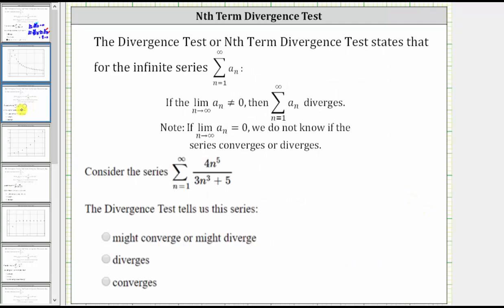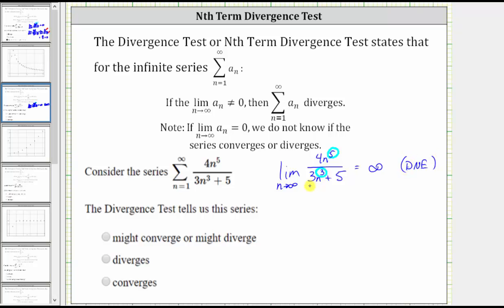Let's look at a second example — same question, different series. To apply the divergence test, we need to find the limit as n approaches infinity of four n to the fifth divided by the quantity three n cubed plus five. The degree of the numerator is five and the degree of the denominator is three. Because the numerator has a higher degree, as n approaches infinity the numerator increases faster than the denominator, and therefore the fractions get larger and larger and approach infinity — this limit does not exist.